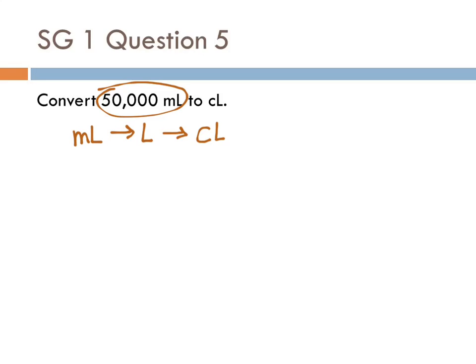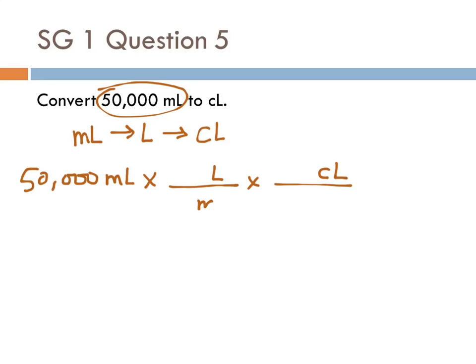So we'll start writing our equation now: 50,000 milliliters. We have two arrows and two conversion factors. Our path says milliliters to liters to centiliters, so we're going to write milliliters to liters to centiliters. We want the milliliters to cancel out, so in this second term we divide by milliliters — the milliliters cancel out. In the last term we divide by liters so that the liters cancel out.